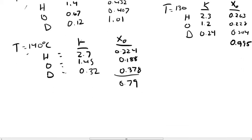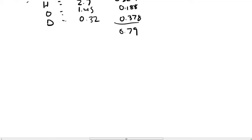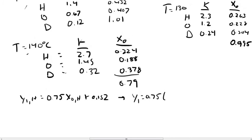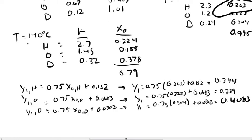Now we apply our enriching operating equations to find the y values for Stage 1. For heptane: y1 = 0.75·x_0 + 0.152 = 0.75 × 0.263 + 0.152. The same is done for octane and decane. These y1 values are the compositions at Stage 1 and are used for further stage-by-stage calculations. You repeat the same process: use y1 to find x1, then use x1 to find y2, and so on. That is how to do stage-by-stage calculations.